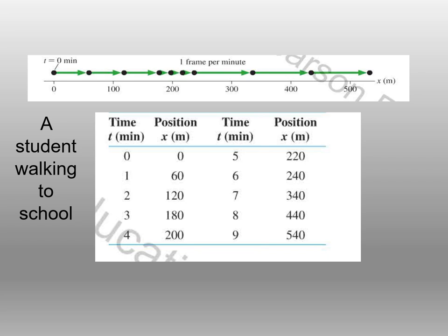We can look at the scale and consider a student walking to school. At time zero and position zero, that is the origin, that is where the student starts. Each dot represents a time frame. At time one, the student is approximately at 60 meters. At time four, the student is approximately at 200 meters. That's how you read this table — position with respect to time.